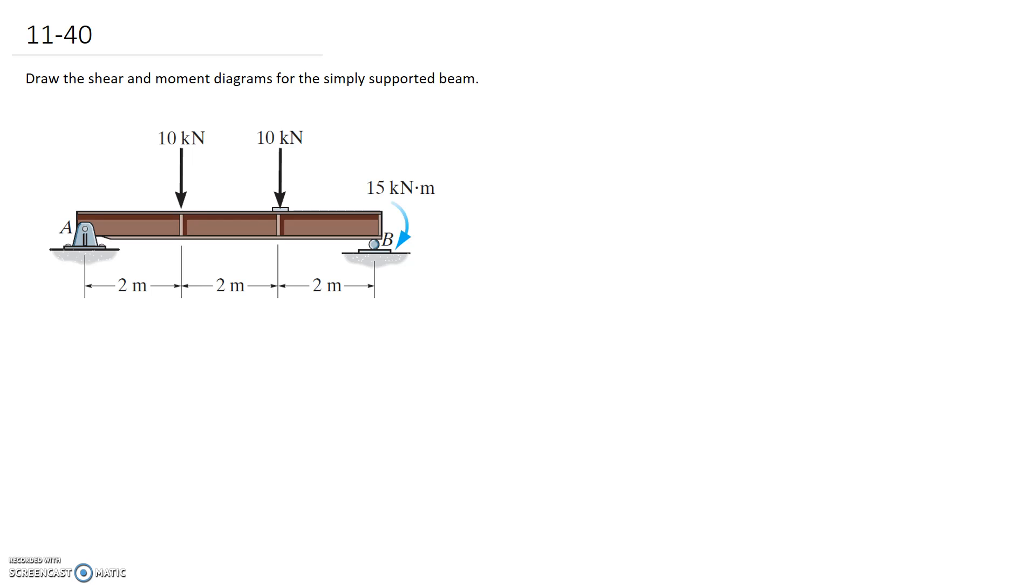To start off with, what I'm going to do is draw the free body diagram and find the reactions at the pin and at the roller. We have the two 10kN forces and a couple. We need to replace the roller with a vertical reaction force which I'll call BY, and the pin has a horizontal and a vertical reaction that we're going to draw in. Let me just quickly transfer over all these distances which we're told are 2m.